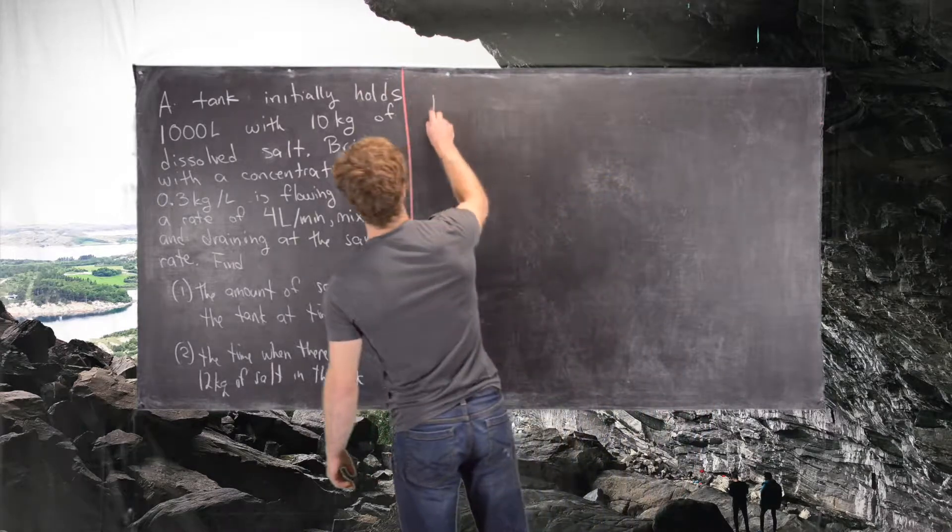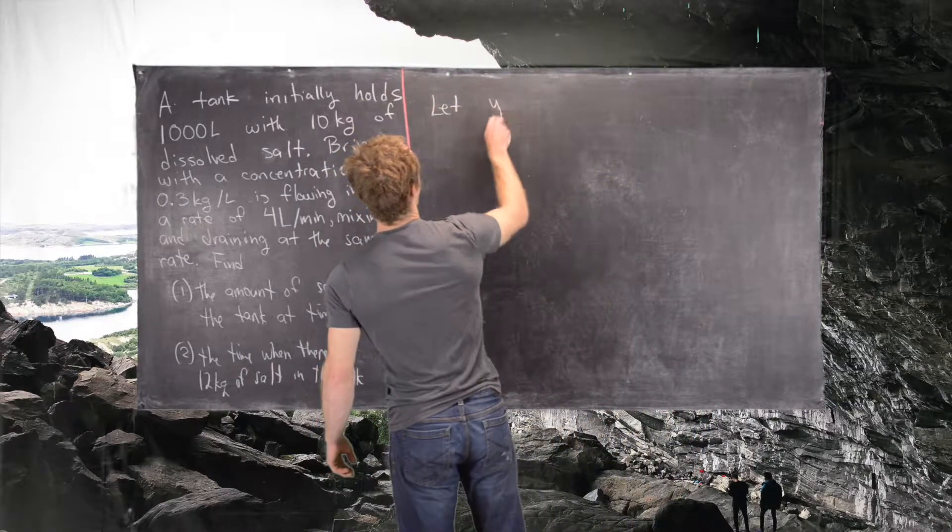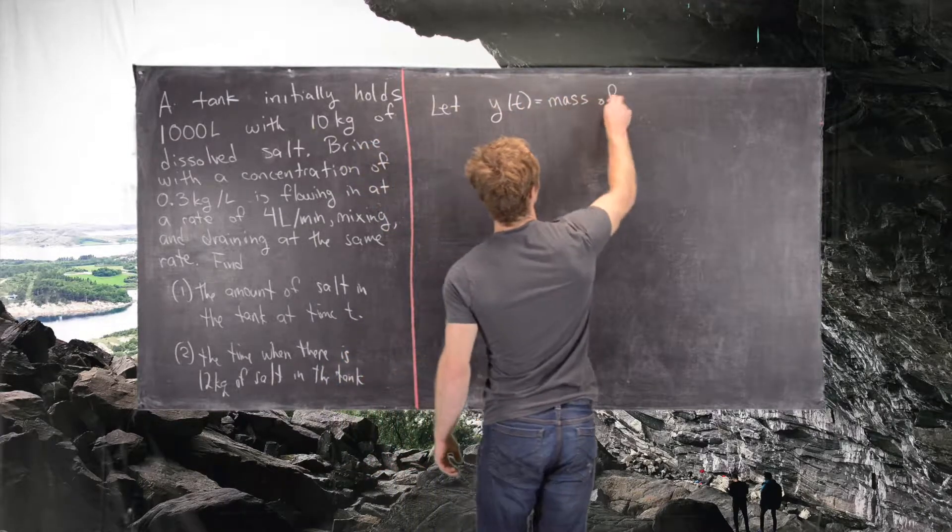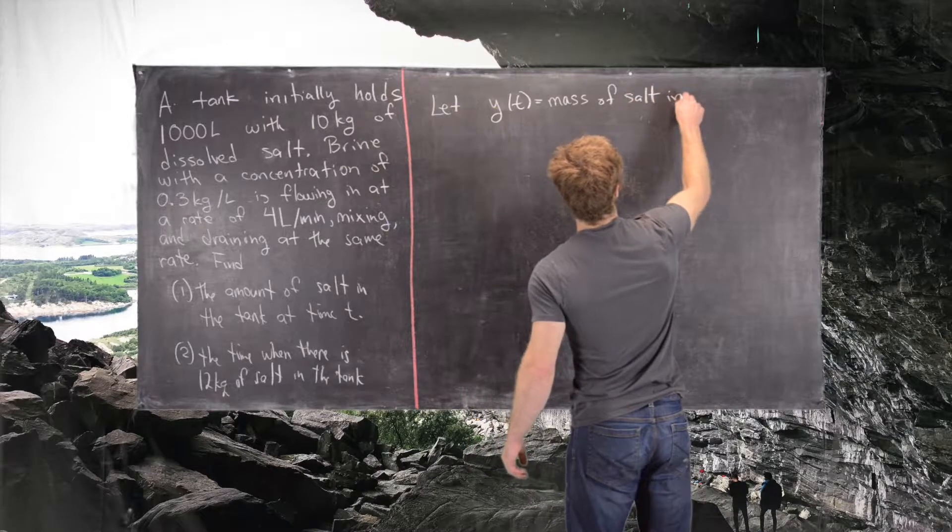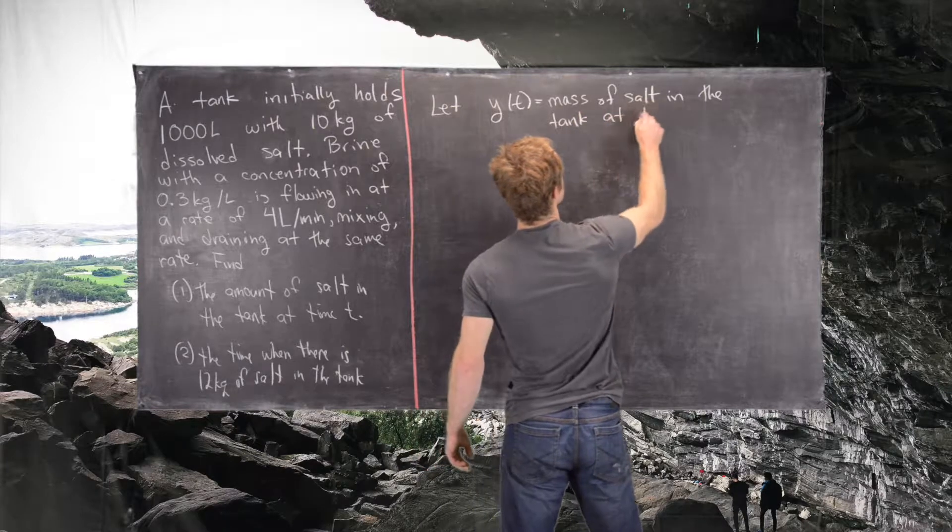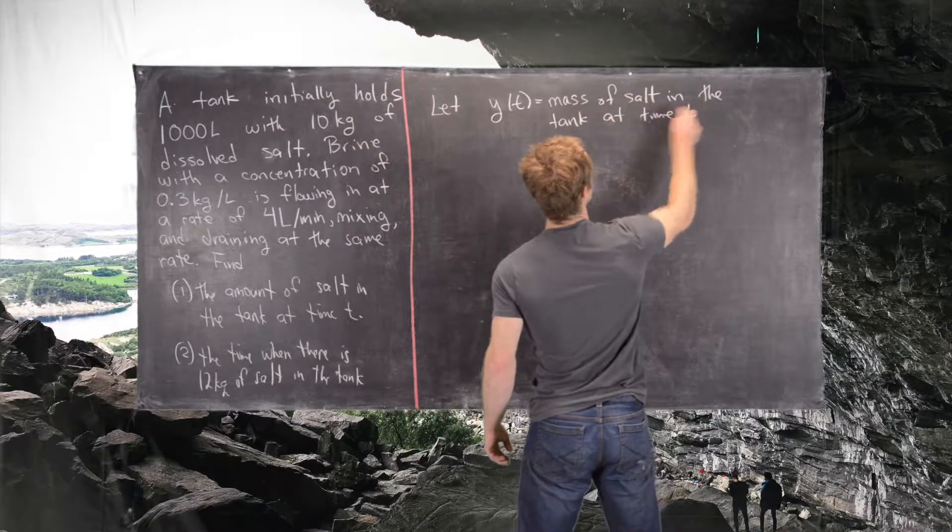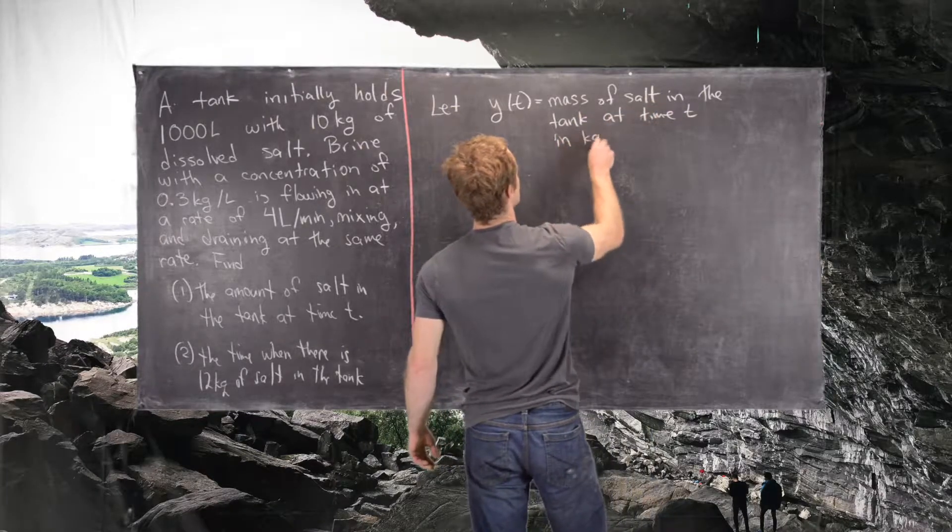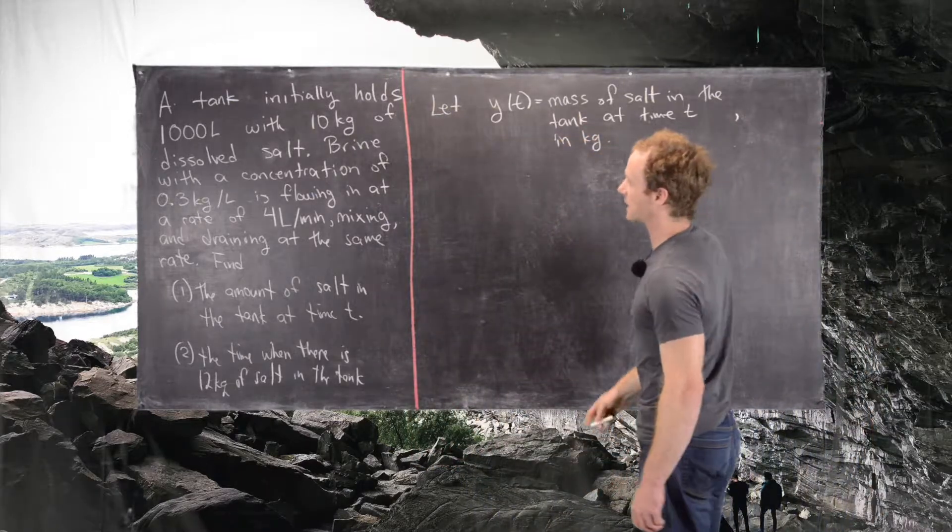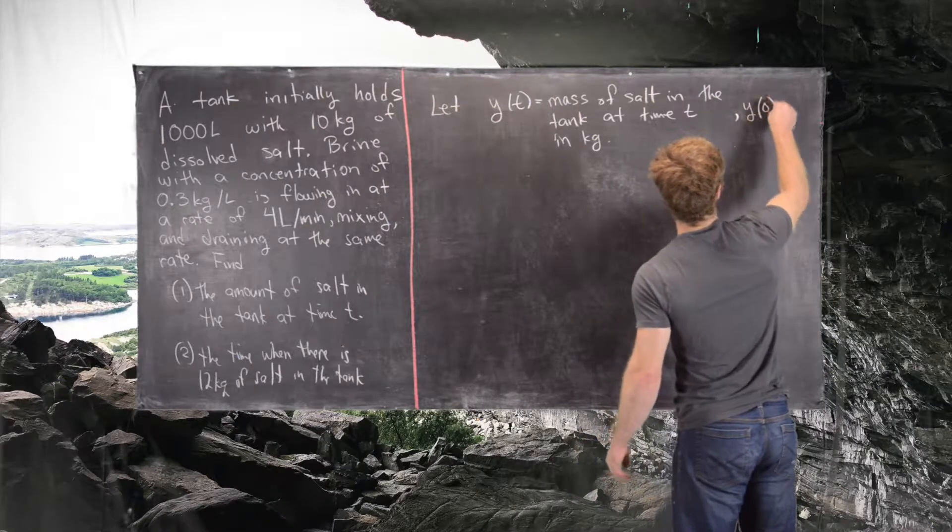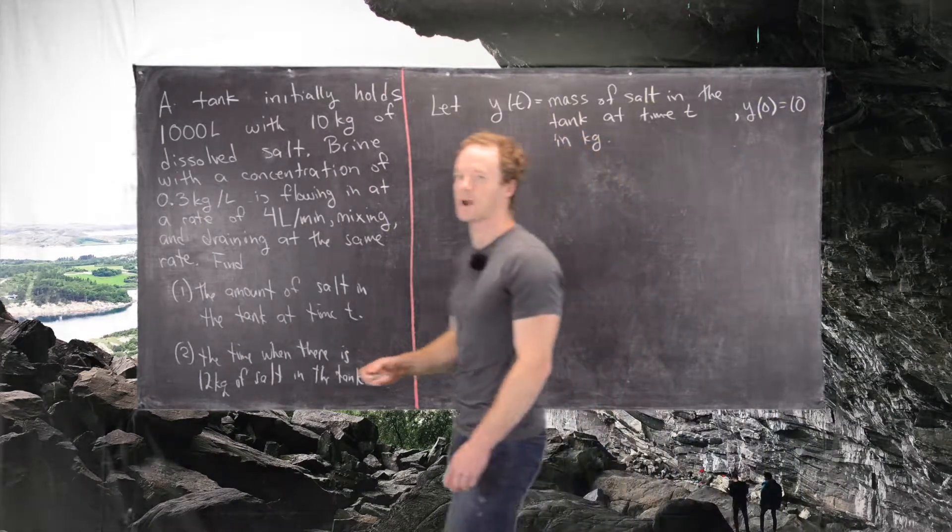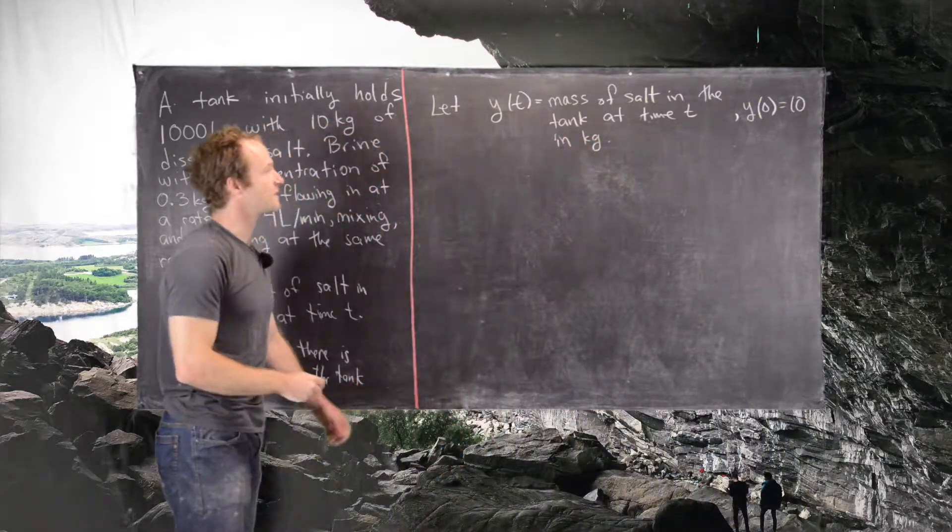Our setup will be as follows. Let's let y of t equal the mass of salt in the tank at time t in kilograms. Notice we already know one thing: at time 0 there are 10 kilograms of salt in the tank, so we can write y of 0 equals 10.